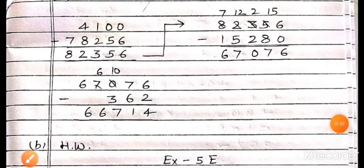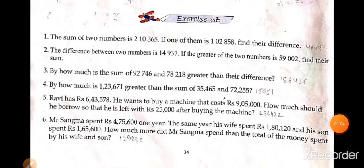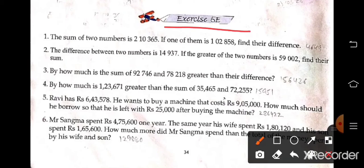Now exercise 5E at page number 34. Here exercise 5E — some story sums are here.